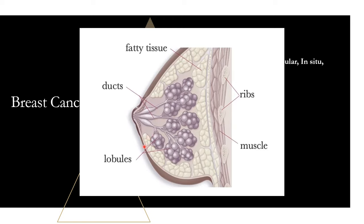Step two is whether the cancer stays put or spreads. If it stays confined to the lobule or duct without breaking through the basement membrane, it's called in situ. If it breaches the duct or lobule — breaks through the basement membrane and spreads to surrounding structures — it's known as infiltrating or invasive. So you can have infiltrating lobular carcinoma or infiltrating ductal carcinoma.